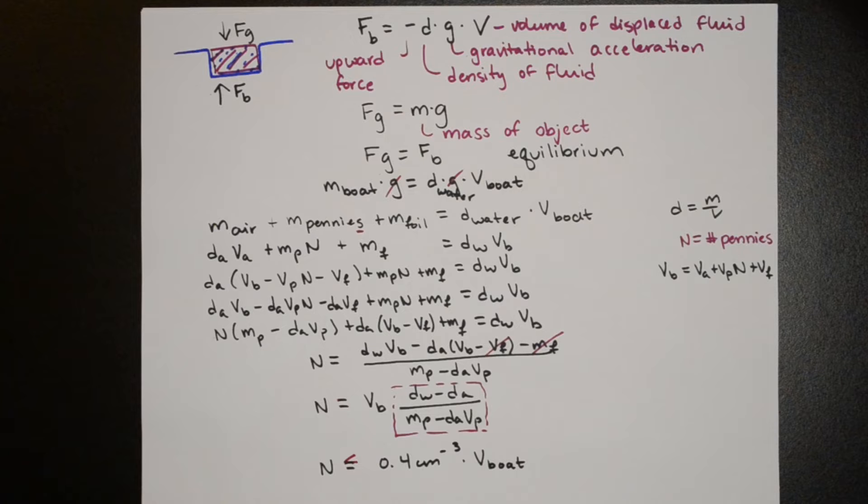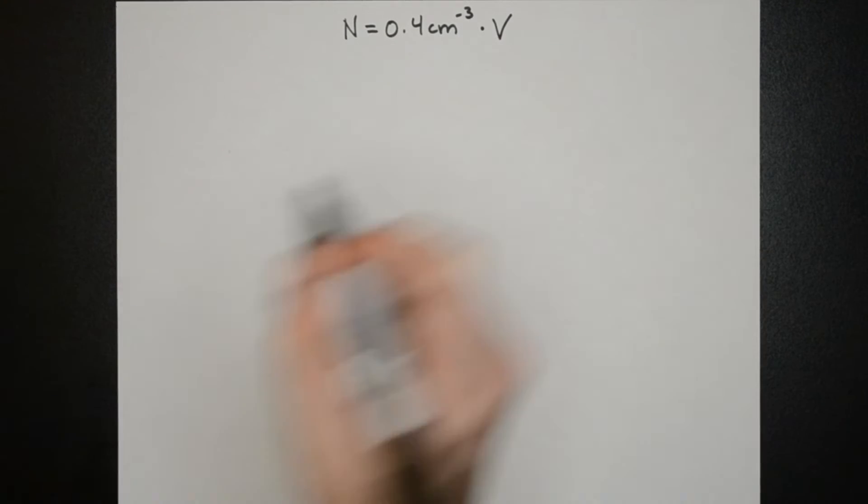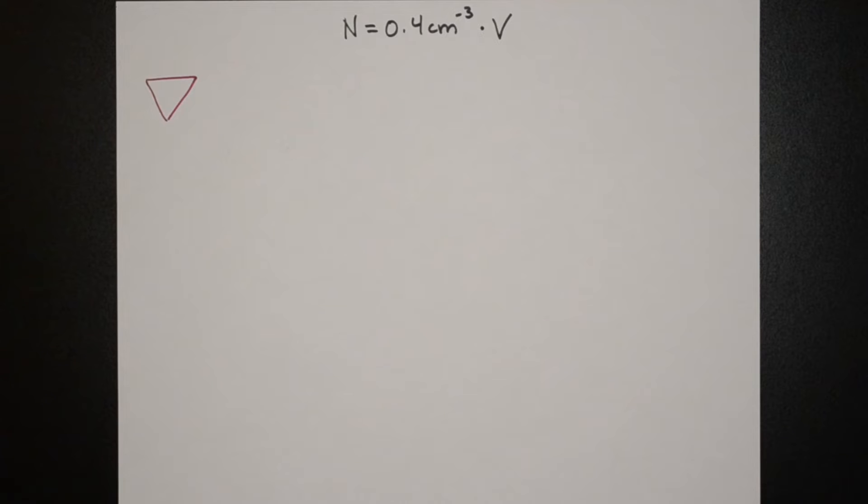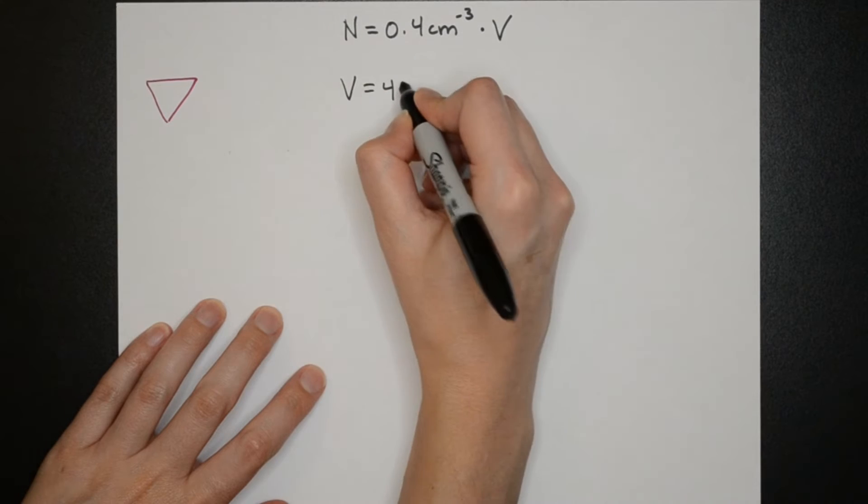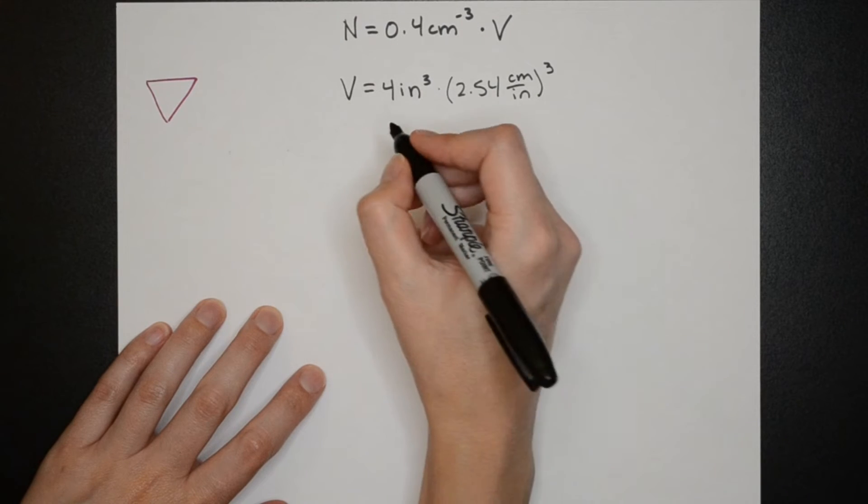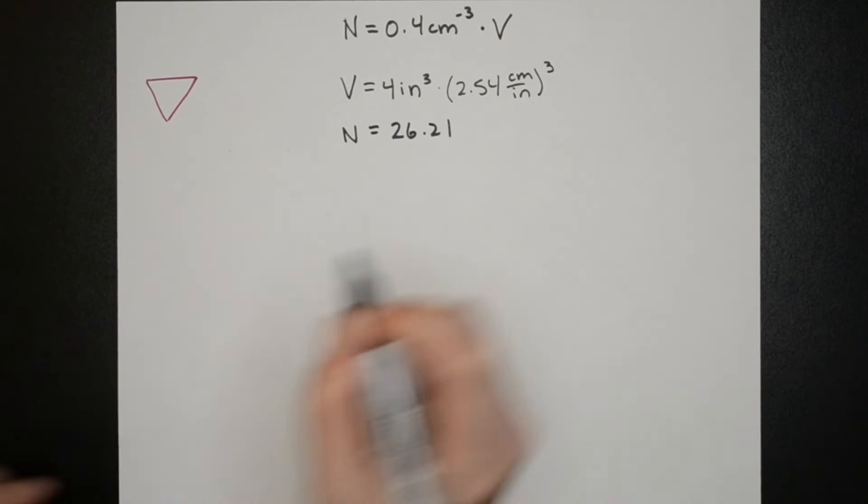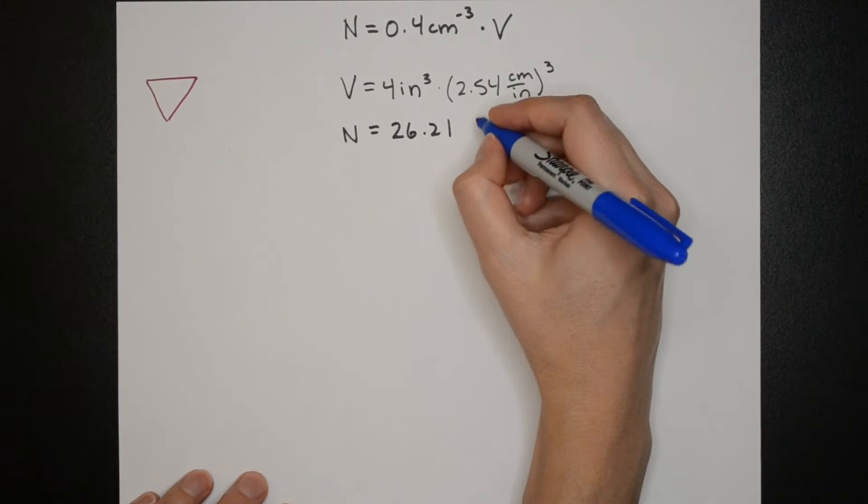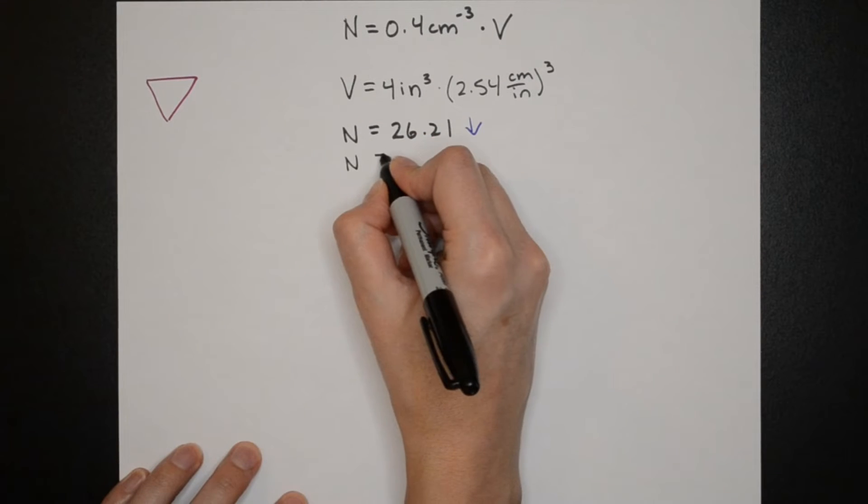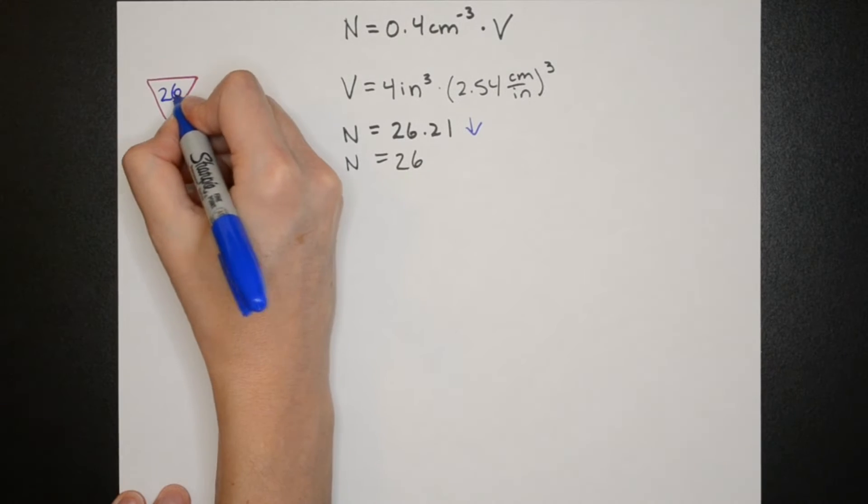Now we have the number of pennies in terms of volume so we can use the volumes we calculated earlier to plug in and find n. Since the equation for n is in the units of centimeters cubed I need to convert this back into inches and so for the canoe we see that n is equal to 26.21 pennies, but n must be an integer because we're not using pieces of pennies so for all these values we need to round down. So the estimate for the number of pennies in the canoe is 26.